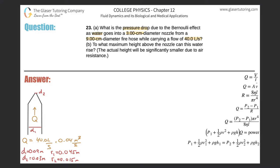Now we have all the right units and we can actually approach the problem. Before I start calculating, I'm making sure I have all the correct units. We need to find the pressure drop. The idea here is that the velocity of flow will be different — Q is constant, the volume flow rate, but the velocity is different. The velocity flowing through the nozzle will be faster than through the hose.